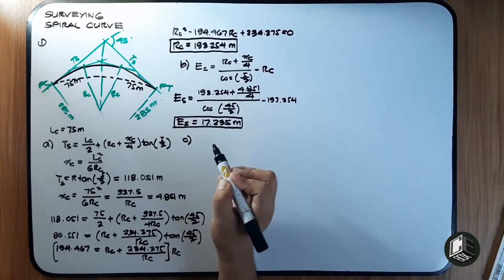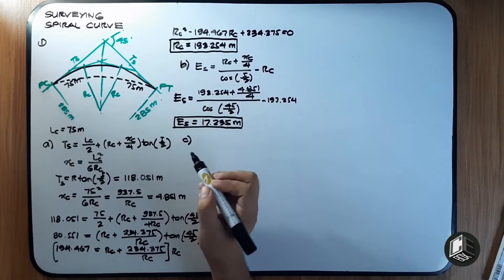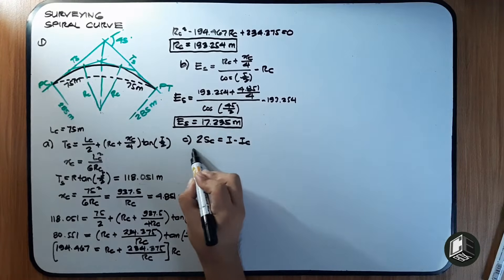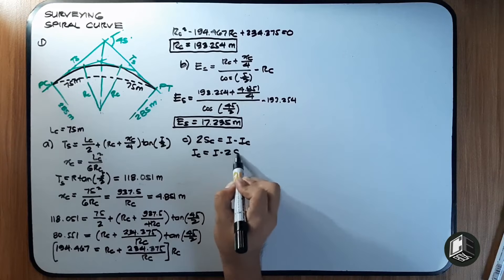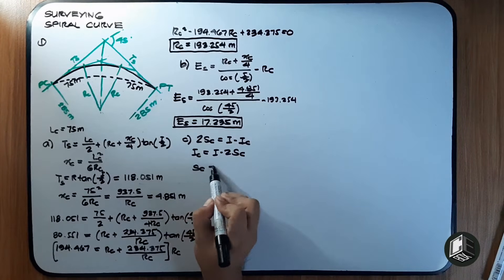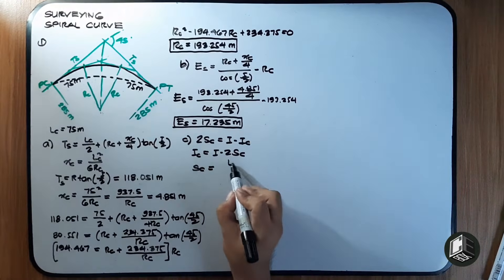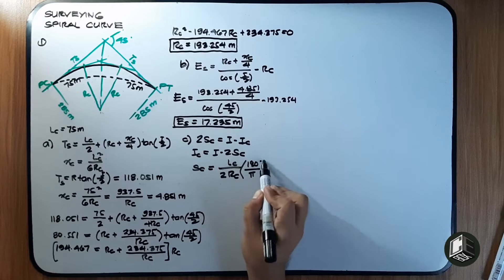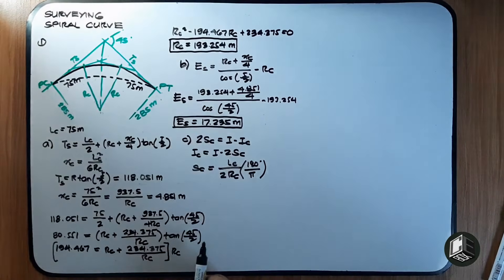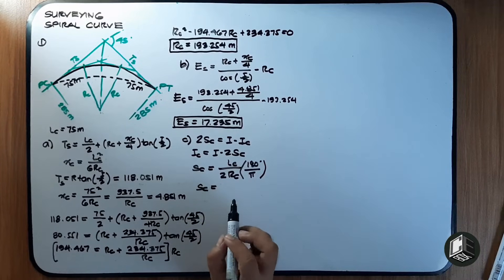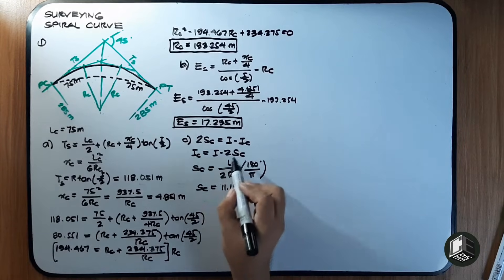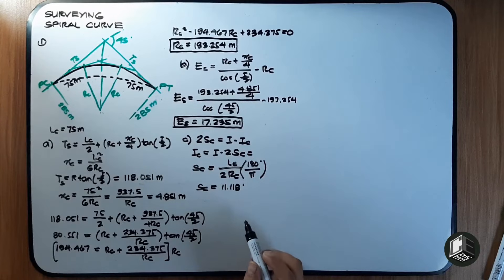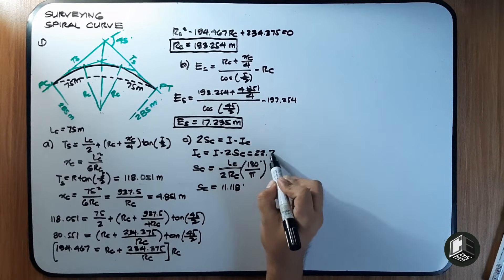For Letter C, we find the central angle of the circular curve, ic. The relationship is: i = ic + 2θs, so ic = i − 2θs. First, θs = Lc / (2Rc) × (180/π) = 75 / (2 × 193.254) × (180/π) = 11.118 degrees. Therefore, ic = 45 − 2(11.118) = 22.764 degrees.